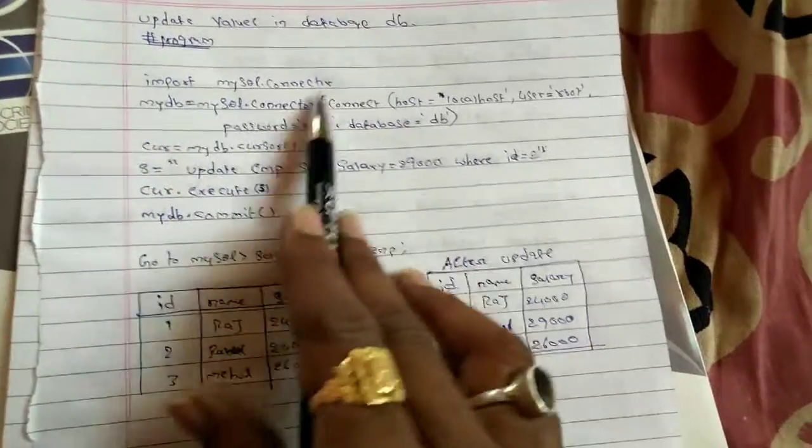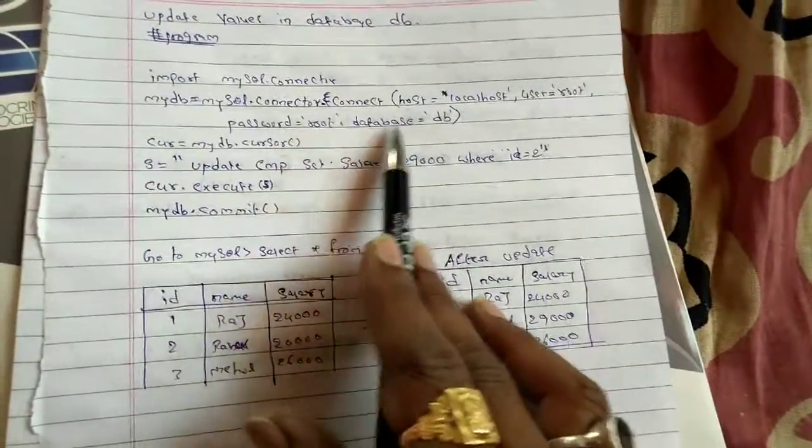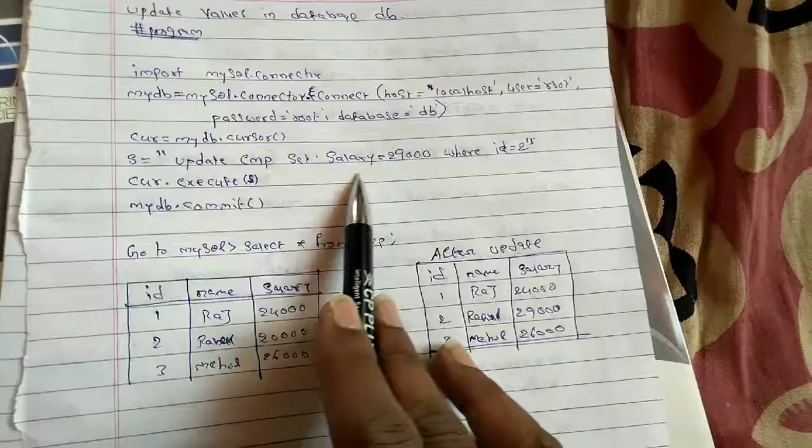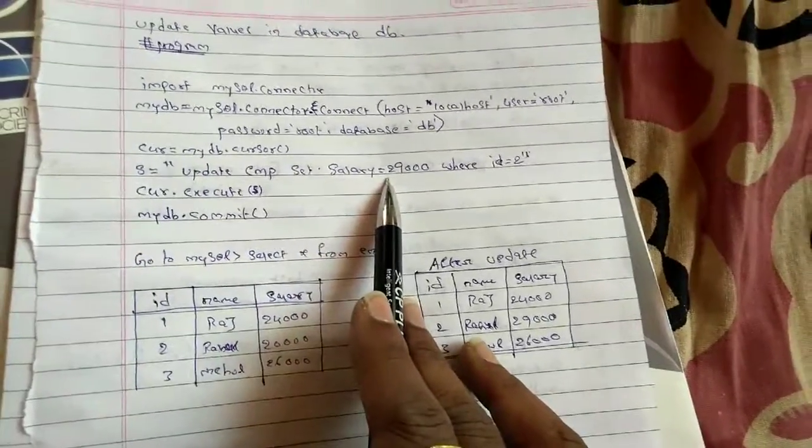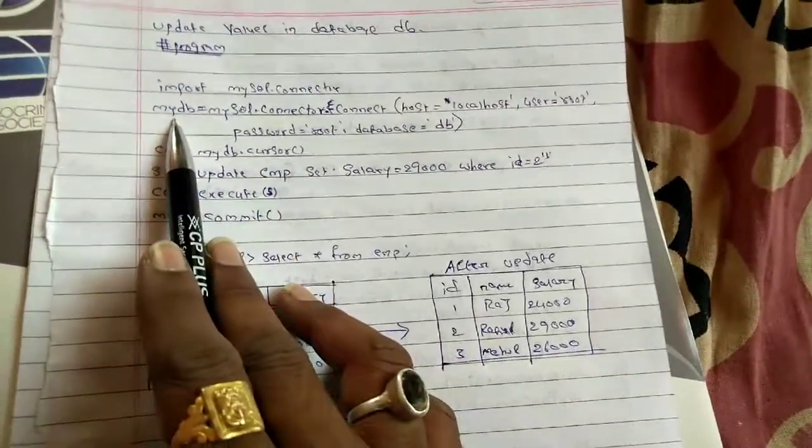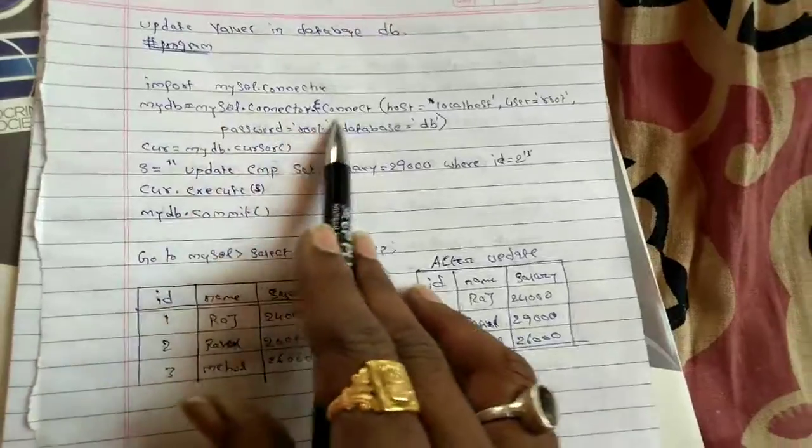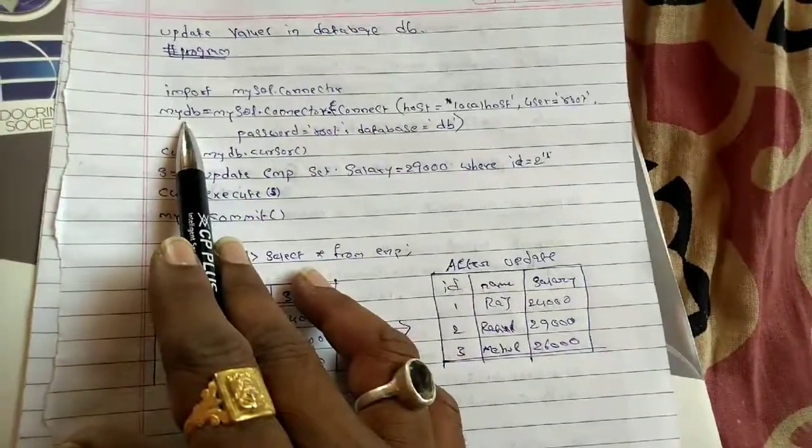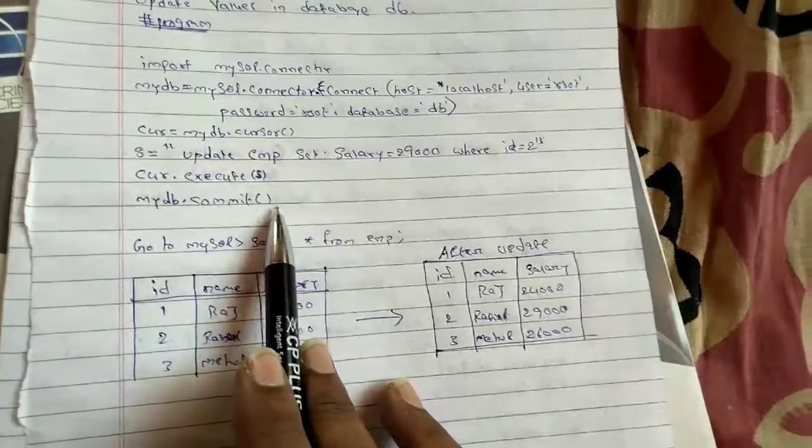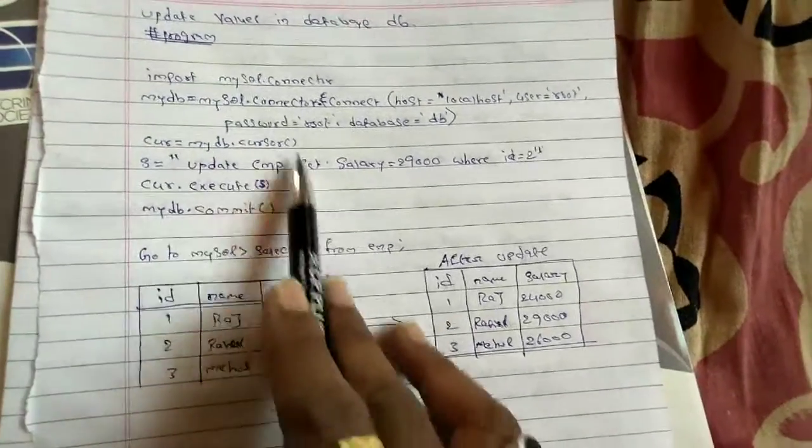Whatever the program working procedure will be done, those changes will be implemented in mydb because mysql.connector.connect is given in the mydb variable. So mydb.commit command is a command which will execute your query.